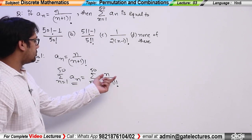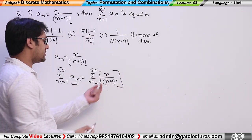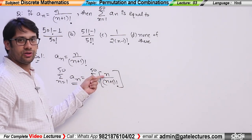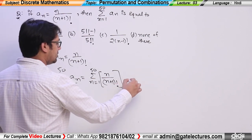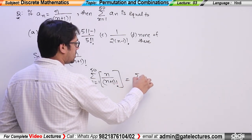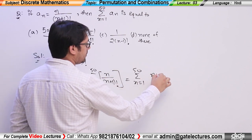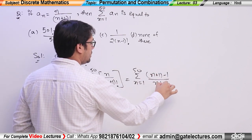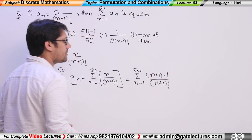Now see, the given term is n / (n+1)!. In this case, if I add +1 and subtract -1 with n, it makes no difference. So we can write this as summation from n=1 to 50 of (n+1 − 1) / (n+1)!